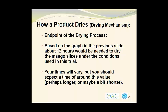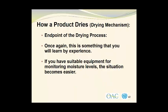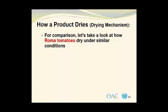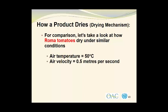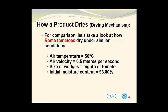The drying time might be longer or a bit shorter, and this is something you will learn from experience. If you have suitable equipment for monitoring moisture levels, the situation becomes easier. For comparison, let's look at how Roma tomatoes dry under similar conditions: air temperature of 50 degrees Celsius, air velocity of 0.5 meters per second. The tomatoes are cut into wedges, each representing one-eighth of the tomato, with an initial moisture content of 93.80% as determined using a moisture balance.